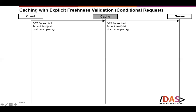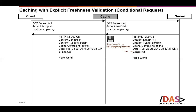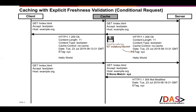The second concept is freshness validation, also called a conditional request. In this scenario, the server responds with a header field containing a validation token in the ETag header. This response is stored by the cache under the same cache key and forwarded to the client. Later, when a client wants to retrieve the same resource, the cache uses this validation token to conduct a conditional request, forwarding it to the server with an If-None-Match header field containing the token. Based on this token, the server can identify whether the resource is still fresh.